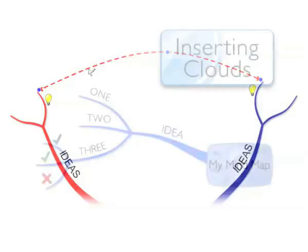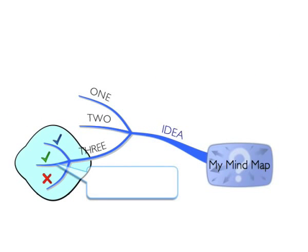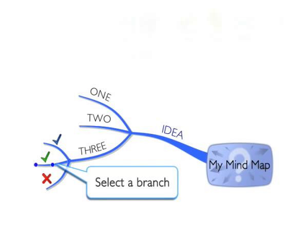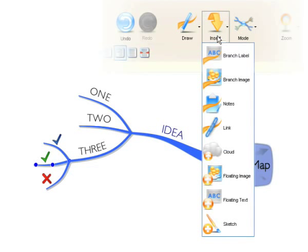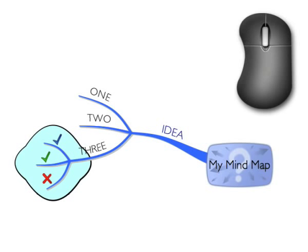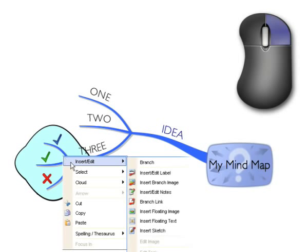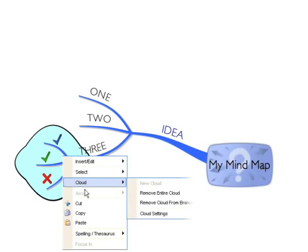To insert a cloud, select the branch you want the cloud to appear around. Click on Insert and then Cloud. To format the cloud, right click on the branch where the cloud is attached and select Cloud Settings.